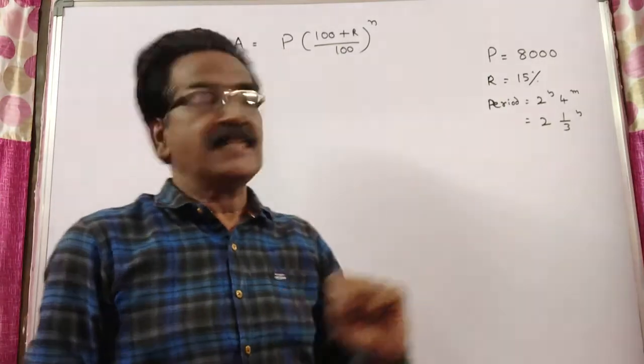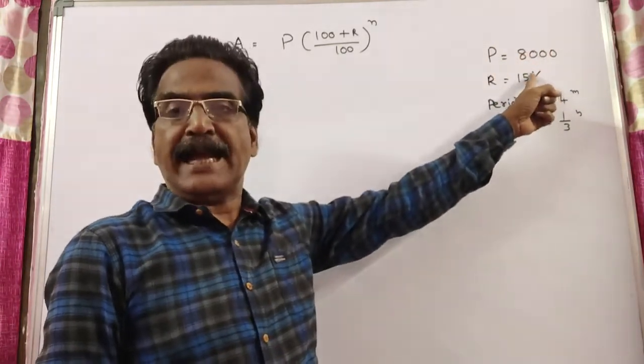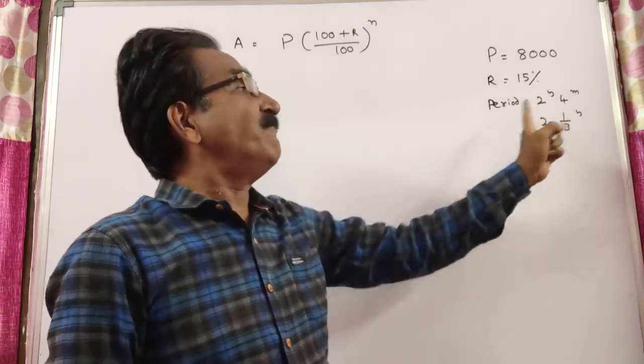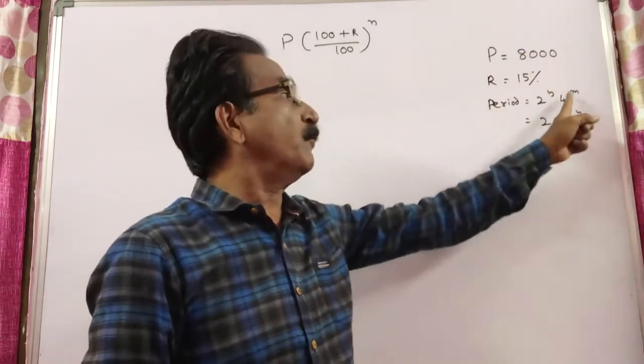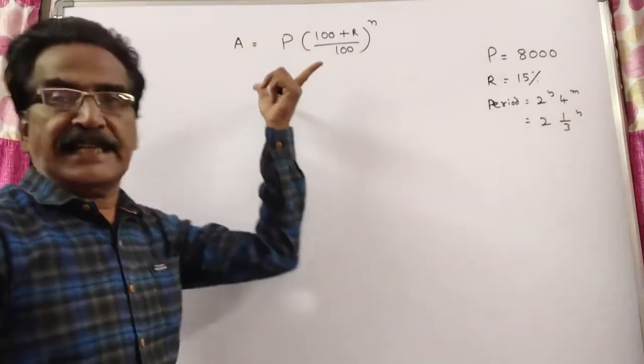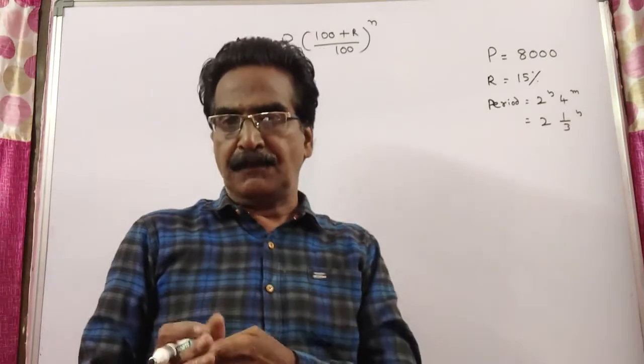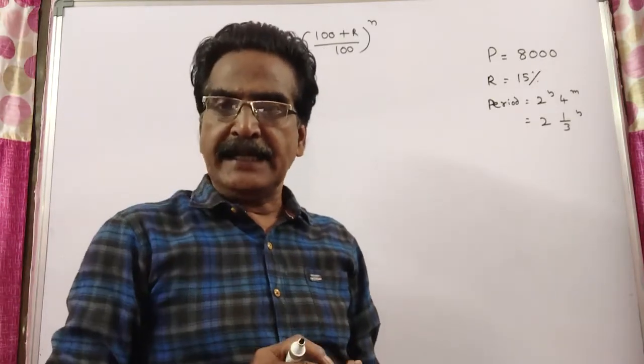Find the compound interest on Rs.8000 at 15% per annum for 2 years 4 months. 2 years 4 months means 4 by 12, 1 by 3 year. So firstly, let us find the compound interest amount and then subtract the principal to get the interest.